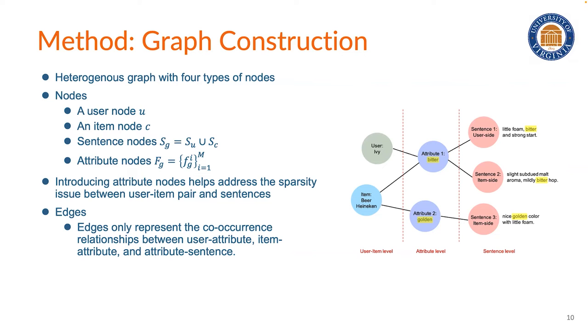Currently, we only use the edge to represent the co-occurrence relationship between user and attribute, item and attribute, and also item and sentence. There is no weight on each edge. The figure on the right side shows a simplified example of the graph. You can see that attribute one is connected with sentence one and also sentence two, since these two sentences both contain the word beta. And attribute two is also only connected with sentence three, since only this sentence can have the word golden.